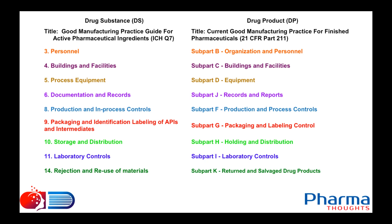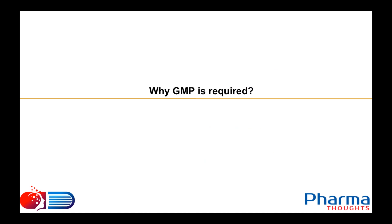Regulations represent the minimum requirements. Guidance builds on those minimum requirements and reflects current best practices. Both ultimately serve the same purpose — ensuring GMP compliance.